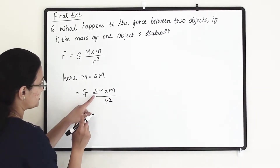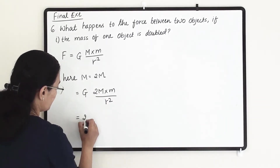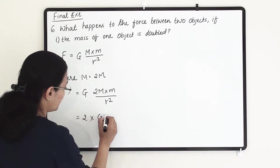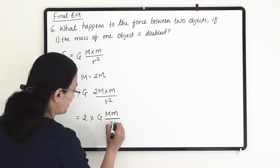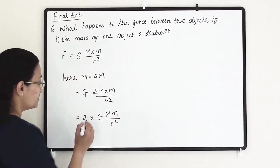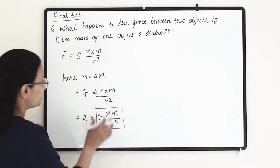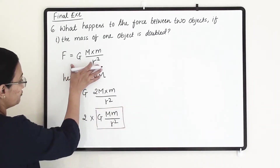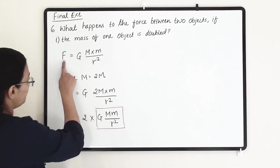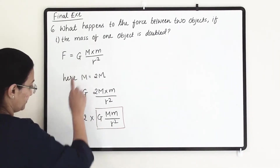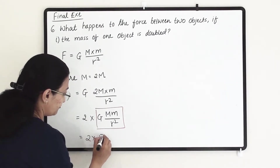Taking the 2 to the front, we get 2 times G times capital M times small m, divided by r square. This expression inside is our original gravitational force formula F, so we can write the result as F equals 2 times F.